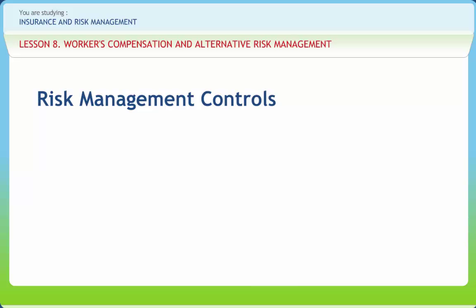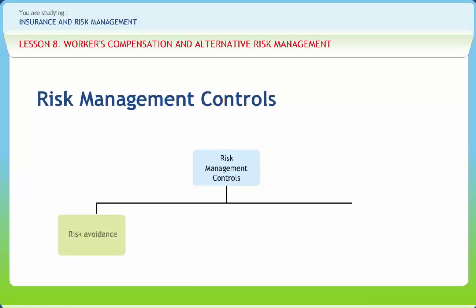Two types of decisions are needed to implement risk management techniques. First are technical decisions as to exactly what action should be taken, and second are managerial decisions as to how and by whom this action should be taken. Methods of risk management control include risk avoidance to completely eliminate the chance of a particular type of loss — an example is the identification of a workplace hazard to which engineering controls are applied — and loss prevention to reduce but not totally eliminate the chance of a given loss, such as the initiation of a job rotation program and warm-up exercises to prevent ergonomic-related disorders.